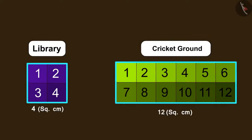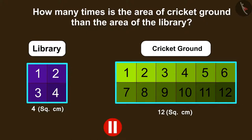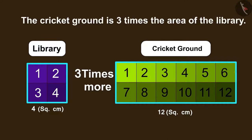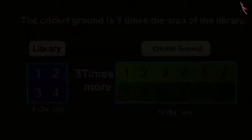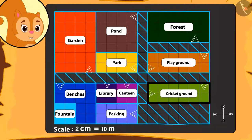So now can you tell how many times is the area of the cricket ground more than the area of the library? You can pause the video to find the answer. Absolutely correct, children! The area of the cricket ground is 3 times the area of the library. Chanda is surprised to know how big the cricket ground is.